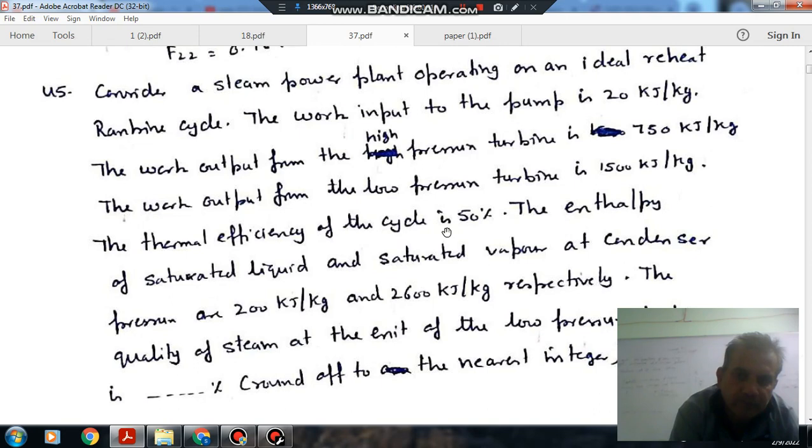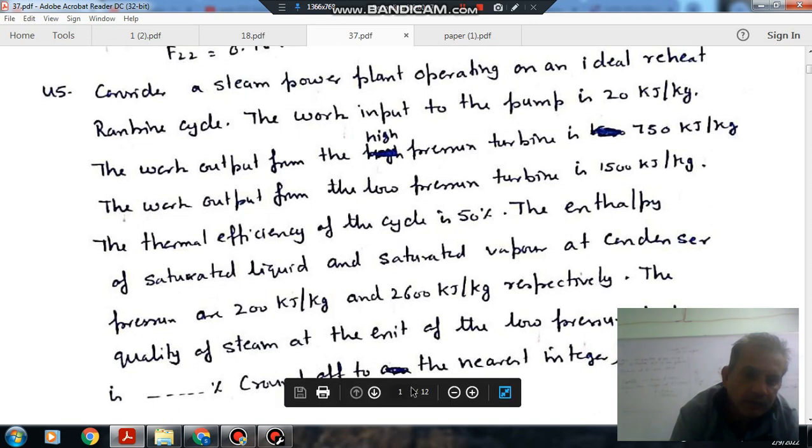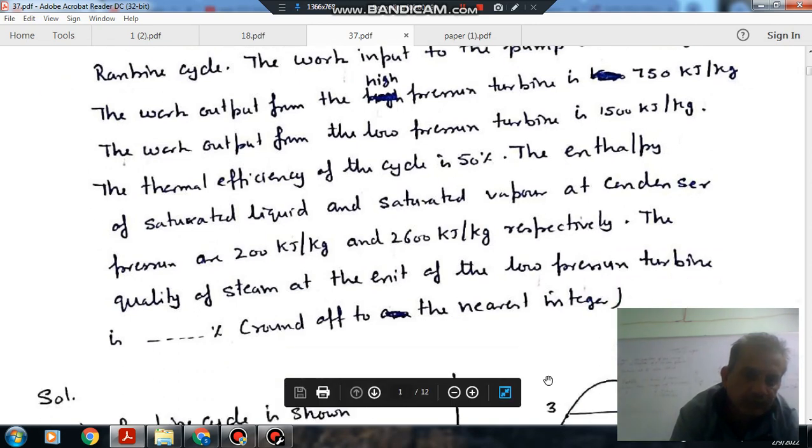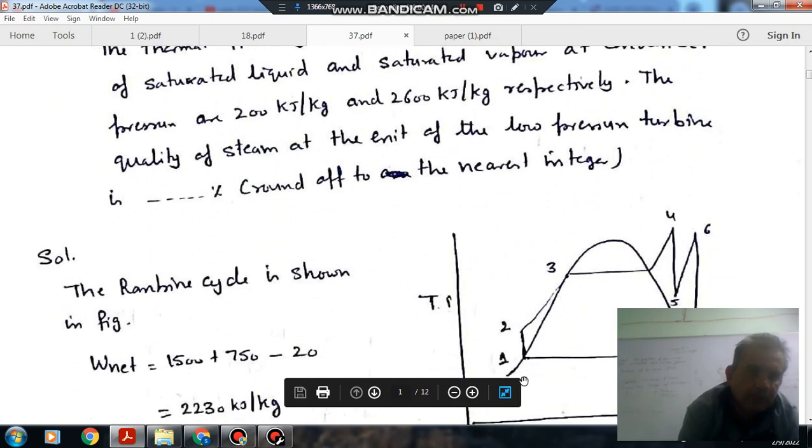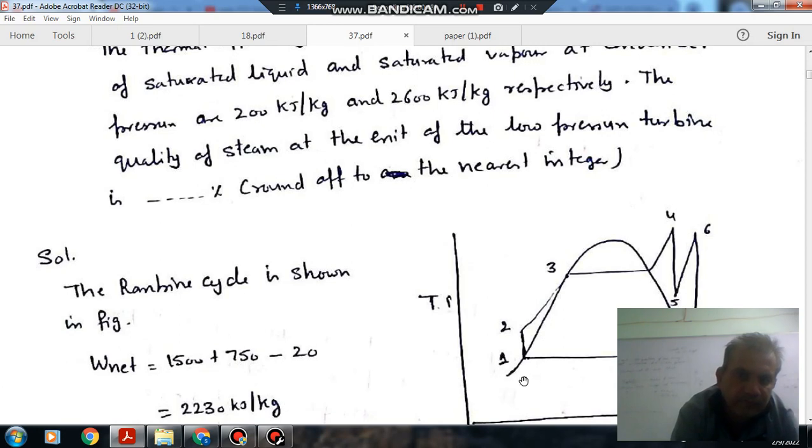Thermal efficiency of the cycle is 50%. Enthalpy of the saturated liquid and saturated vapor at the condenser pressure are 200 kJ/kg and 2600 kJ/kg respectively. The quality of steam at the exit of the low pressure turbine is dash, round off to 2 decimal places.